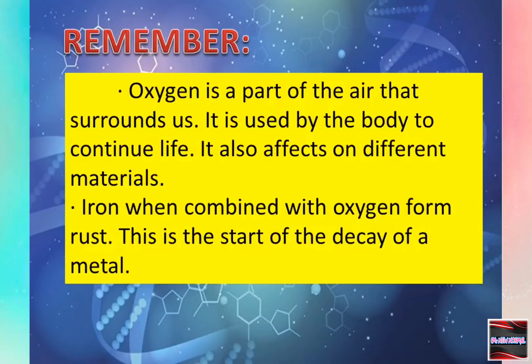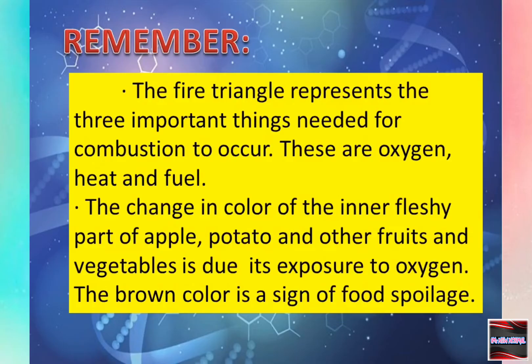Remember, oxygen is a part of the air that surrounds us. It is used by the body to continue life and also affects different materials. Iron when combined with oxygen forms rust — this is the start of the decay of a metal. The fire triangle represents the three important things needed for combustion: oxygen, heat, and fuel. The change in color of the inner fleshy part of apple, potato, and other fruits and vegetables is due to its exposure to oxygen. The brown color is a sign of food spoilage.